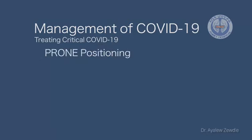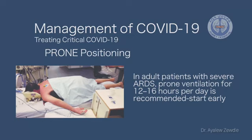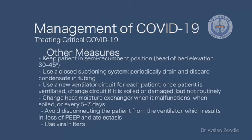Studies recommend prone positioning. In adult patients with severe ARDS, prone ventilation for at least 12–16 hours per day is recommended, and it should be started early. Keep the patient in semi-recumbent position with head of bed elevated more than 30–45 degrees. Use a closed suction system periodically and drain and discard condensate in the tubing. Use a new ventilator circuit for each patient; once the patient is ventilated, change the circuit only if soiled or damaged — not routinely. Change the heat-moisture exchanger when it malfunctions, is soiled, or every 5–7 days. Avoid disconnecting the patient from the ventilator, which causes loss of PEEP and atelectasis.